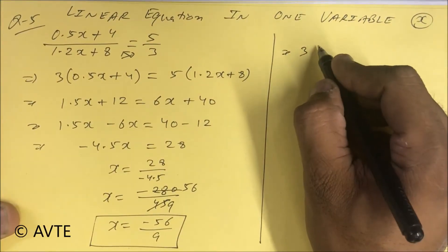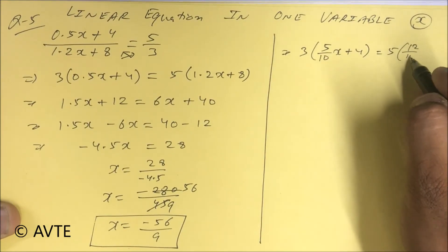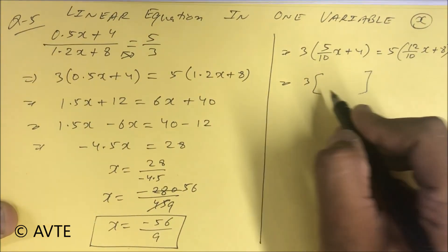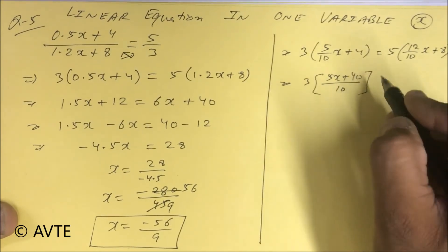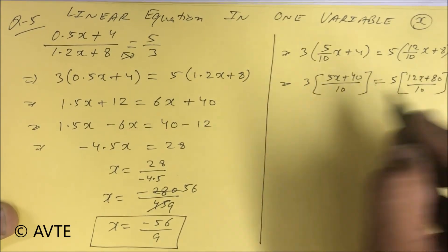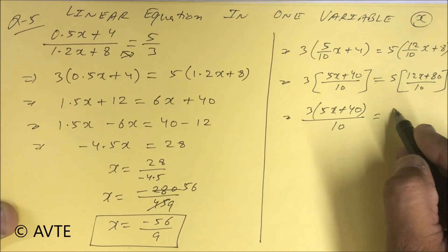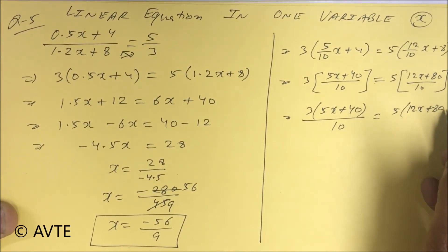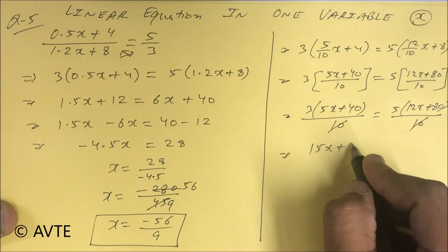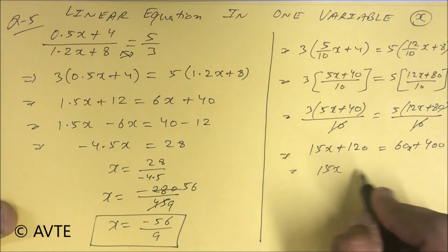We can also do this question in a different style. After cross multiplying we write 3 into 5 over 10 x plus 4 equals 5 in bracket 12 over 10 x plus 8. Taking LCM as 10, that is 3 in bracket 5x plus 40 and 5 in bracket 12x plus 80 upon 10. The 10 cancels, so we multiply: 15x plus 120 equals 60x plus 400.